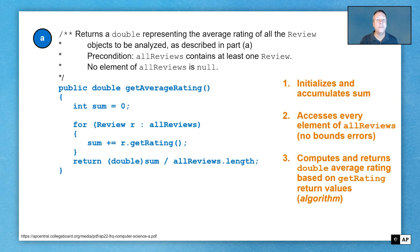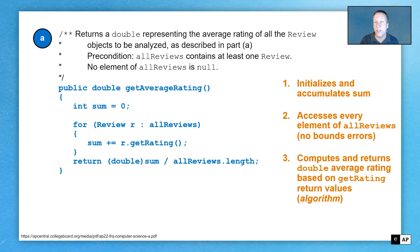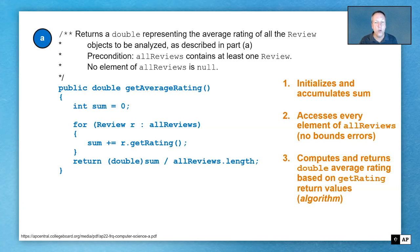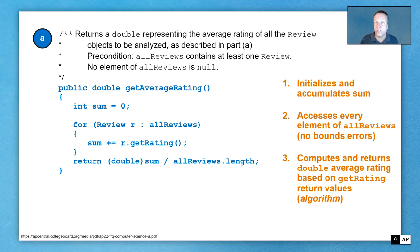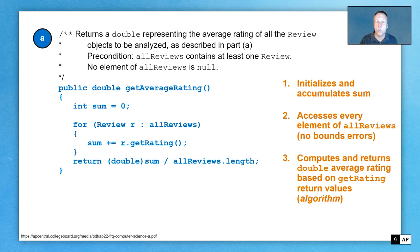Let's look at the code for this. This is a canonical solution — a solution, not the only correct solution. You'll notice that we have a sum variable, and then a for-each loop where it says for every Review r within allReviews. Now remember, allReviews is an array. Whether it's an array or an ArrayList, this for-each loop is going to look the same. When we're traversing through elements, just getting values and not changing any of them, a for-each loop — also called an enhanced for loop — is really nice to use, because you're guaranteed to access all the elements of the data structure, allReviews.